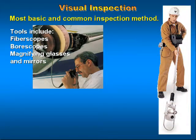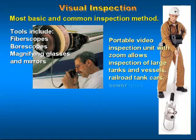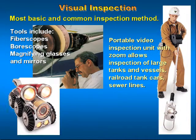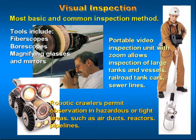Here you see a gentleman on the right using a portable video inspection unit. It zooms the image to allow the inspection of large tanks and vessels, railroad tank cars, and sewer lines. In the lower left-hand corner is an item called a robotic crawler. Robotic crawlers permit observation in hazardous or tight areas such as air ducts, reactors, and pipelines.